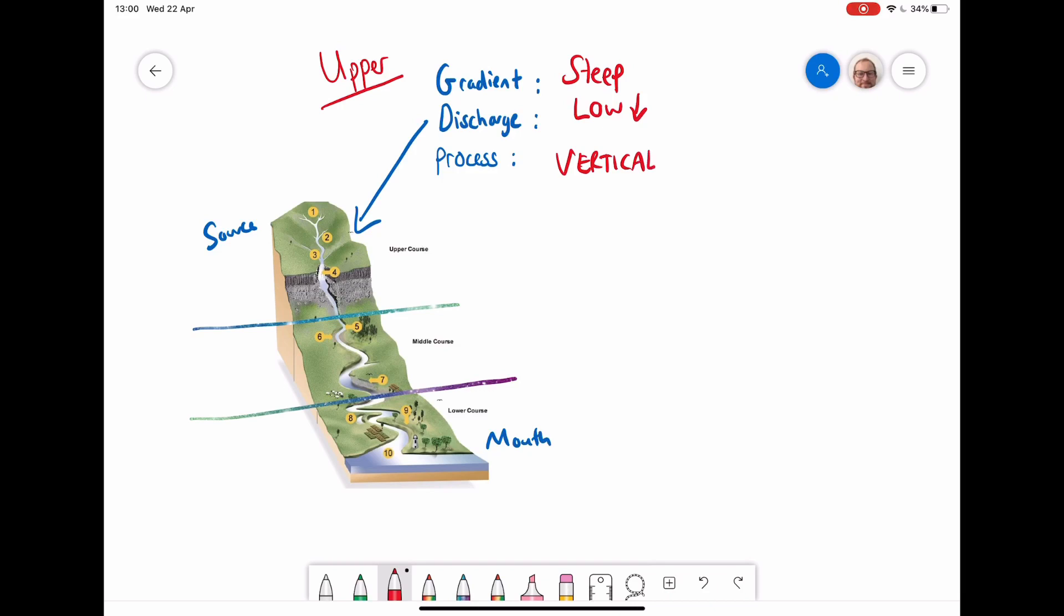And the main reason this happens is because we're high in the mountains here and the gravity is exerting such a force on the water, it's trying to pull it down. But there's not much water because the discharge is so low. And so the river only has the energy at this point to erode vertically.